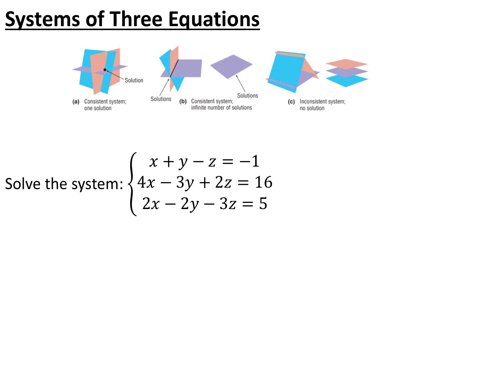We can also look at systems of three equations, where these are planes or three-dimensional lines. It's the same idea: a consistent independent system has exactly one solution, a consistent dependent system has infinitely many solutions where the planes sit on top of each other or intersect along a line, or we can have inconsistent systems with no solution. To solve systems of three equations, we pick two different pairs of equations to eliminate the same variable from, creating a system of two equations to solve.